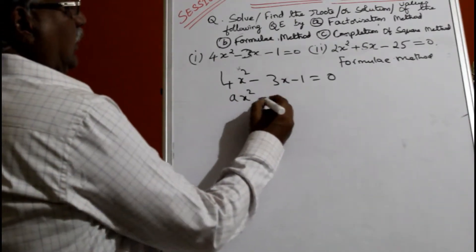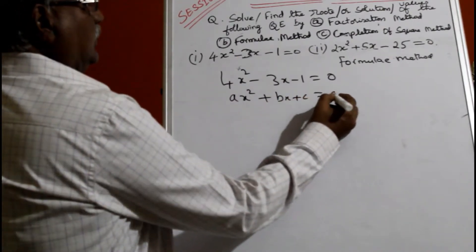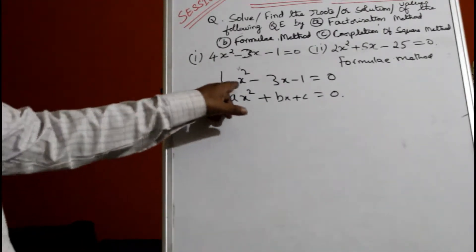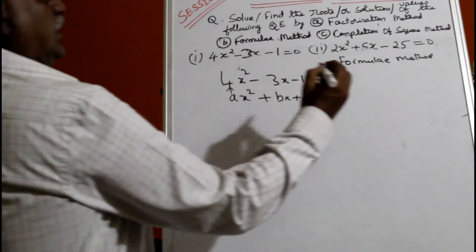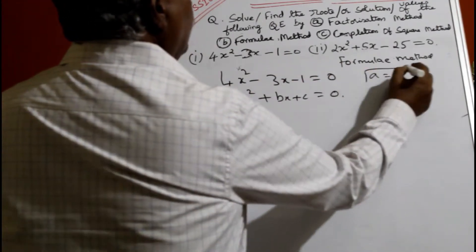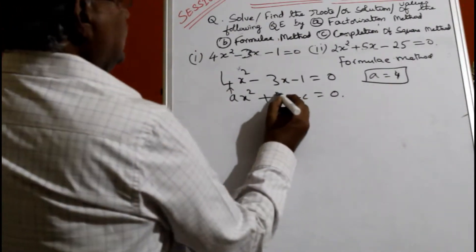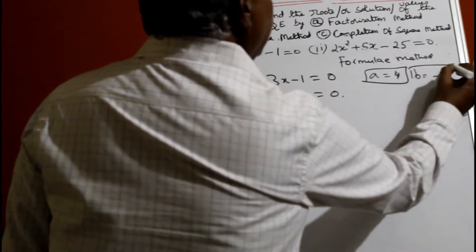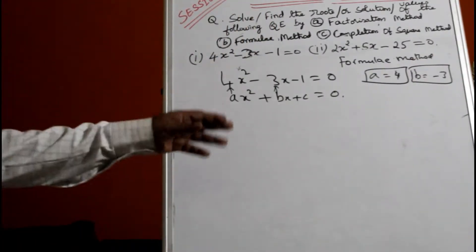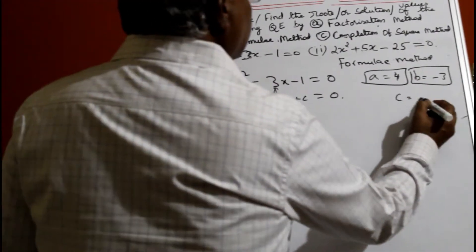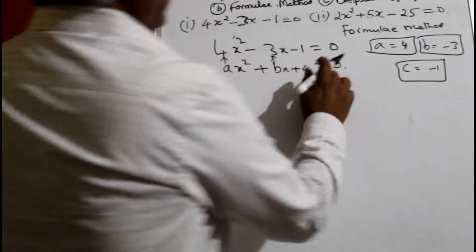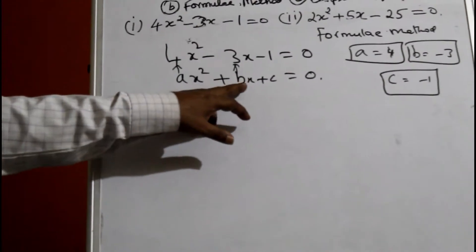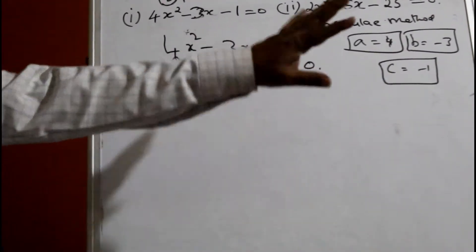Write this as ax² plus bx plus c equal to 0 — this is the quadratic form. In the formula method, a is called the coefficient of x², so a is equal to 4. Next, b is actually minus 3 — with the sign, write b is minus 3. And c is called the constant, c is equal to minus 1. Get the coefficient of x² called a, coefficient of x called b with the sign, and constant with the sign.